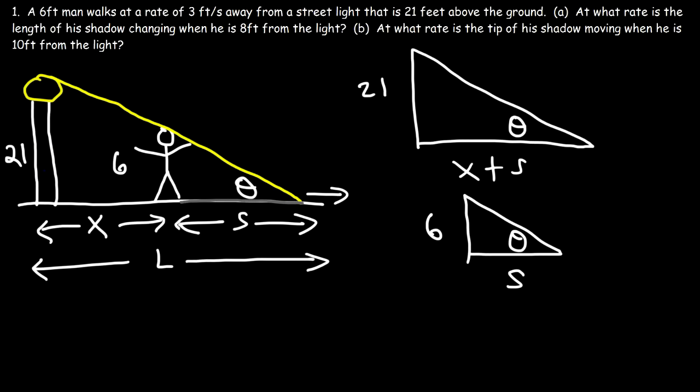If you draw the large triangle, it has the angle theta. And the small triangle has the same angle theta. And both triangles are right triangles.